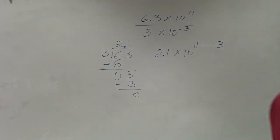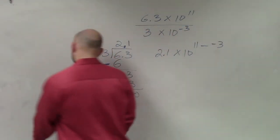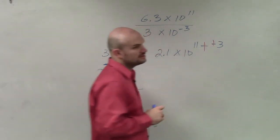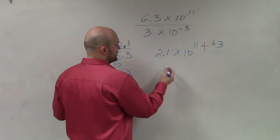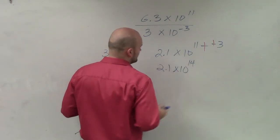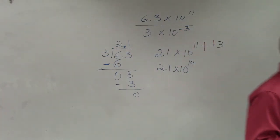When we are dividing, we are subtracting the powers. Make sure that you understand that one power is positive, one power is negative. So I'm actually subtracting a negative, which turns into a double negative. So it's going to be 2.1 times 10 to the 14th power. OK?